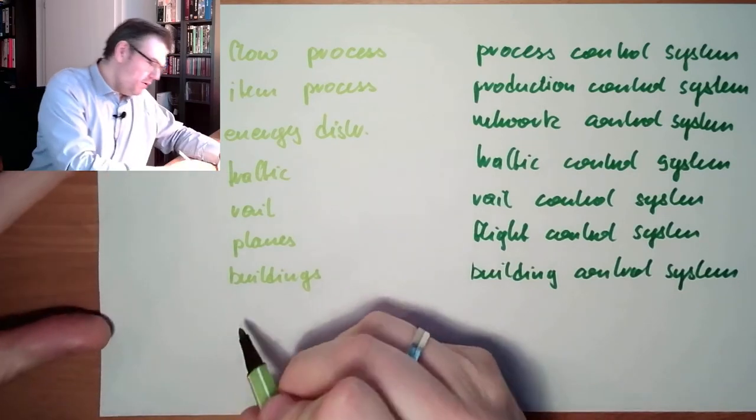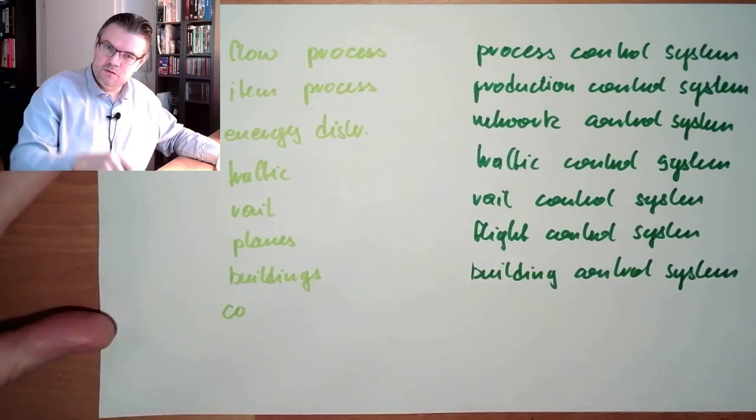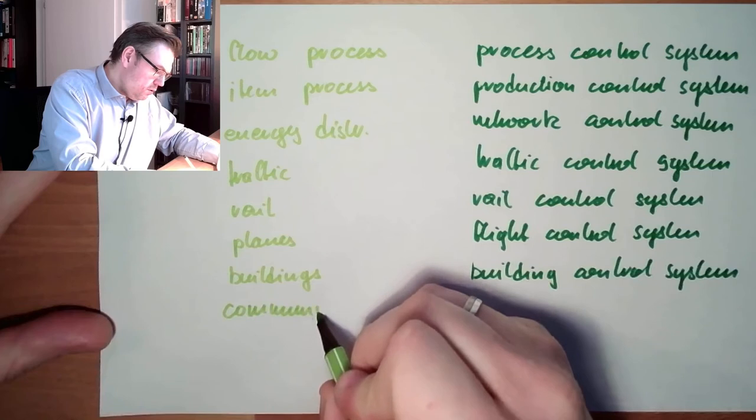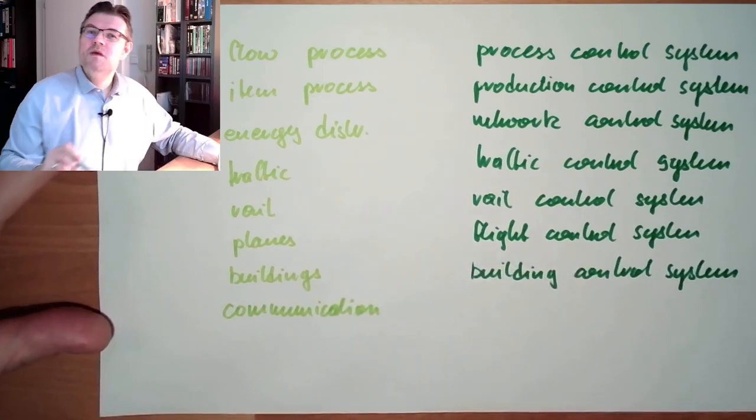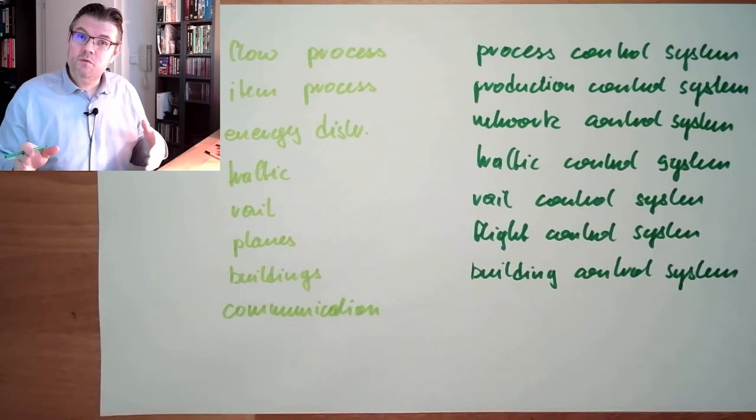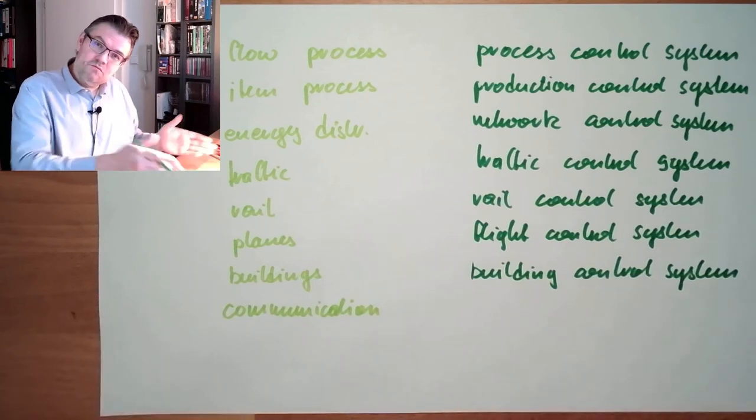Communication. If you dial a number you want to speak to the person you want to reach. If you start streaming in the evening you don't want to wait until it's ready, so there must be some communication control system.